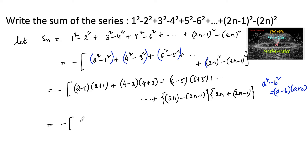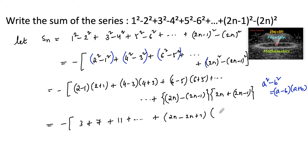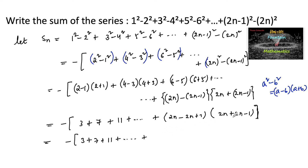Since the difference of 2 consecutive numbers is 1, each (a - b) term equals 1. So we can write: minus of (3 + 7 + 11 + ... + (2n + (2n-1))), where the last term is 4n - 1.